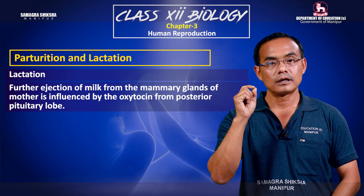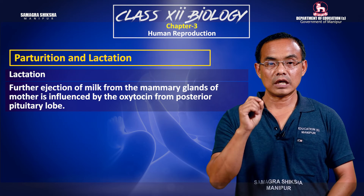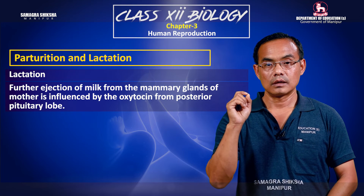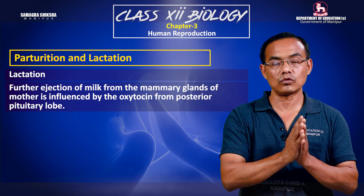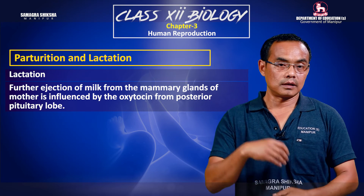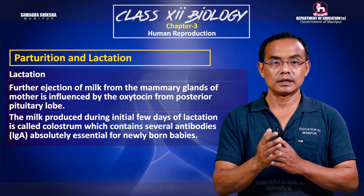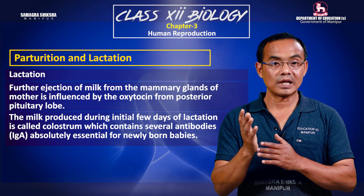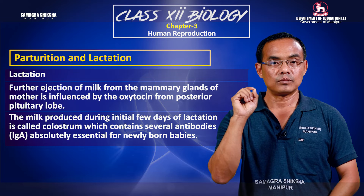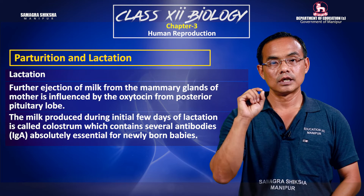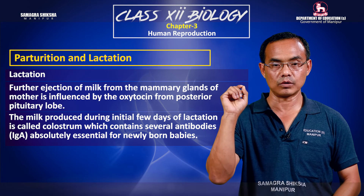The milk that is first produced is called colostrum. Colostrum is a yellow fluid that contains important nutrients and antibodies.